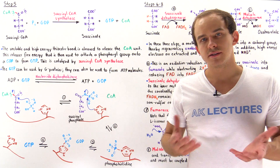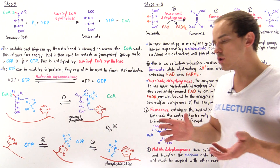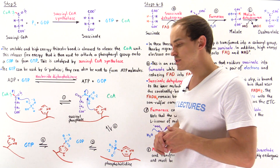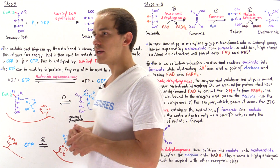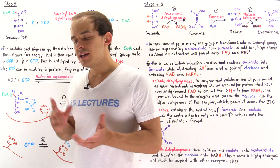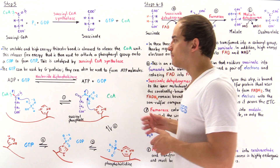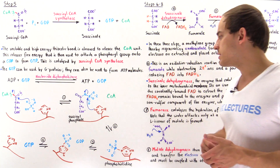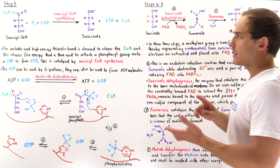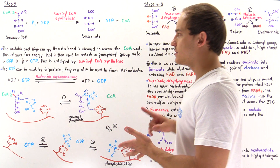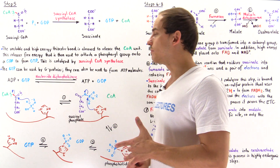The citric acid cycle consists of eight individual steps. So far we discussed the first four steps of the citric acid cycle. Now let's move on and discuss the remaining four steps. In this lecture, we're going to focus on steps 5, 6, 7, and 8 of the citric acid cycle.